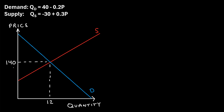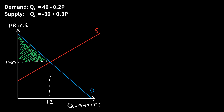For this particular good, the equilibrium price is $140. This is the price that this good is currently being sold at on the market. At that price, there is a demand of 12 units of this good, so this is the equilibrium quantity. When this good is being sold at this equilibrium price and quantity, the area above the equilibrium price but below the demand curve is referred to as the consumer surplus. This area represents the sum of all of the transactions where the consumer actually would have paid more for this good, but they get to enjoy the benefit of only paying $140.